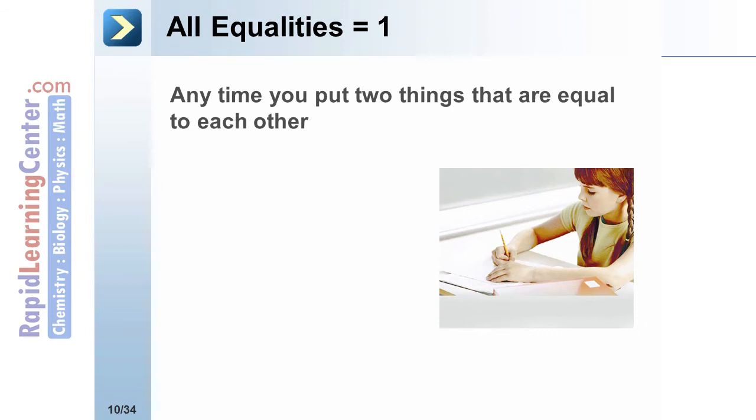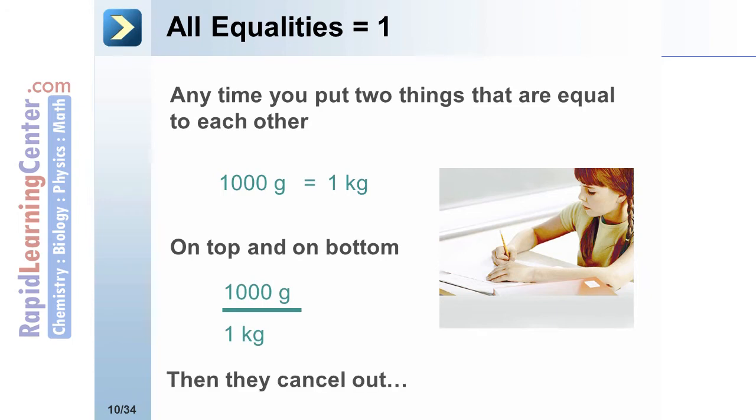Any time two things are equal to each other, such as 1,000 grams and one kilogram, when you place them on top and on bottom of a ratio, such as 1,000 grams divided by one kilogram, they cancel out to equal one.